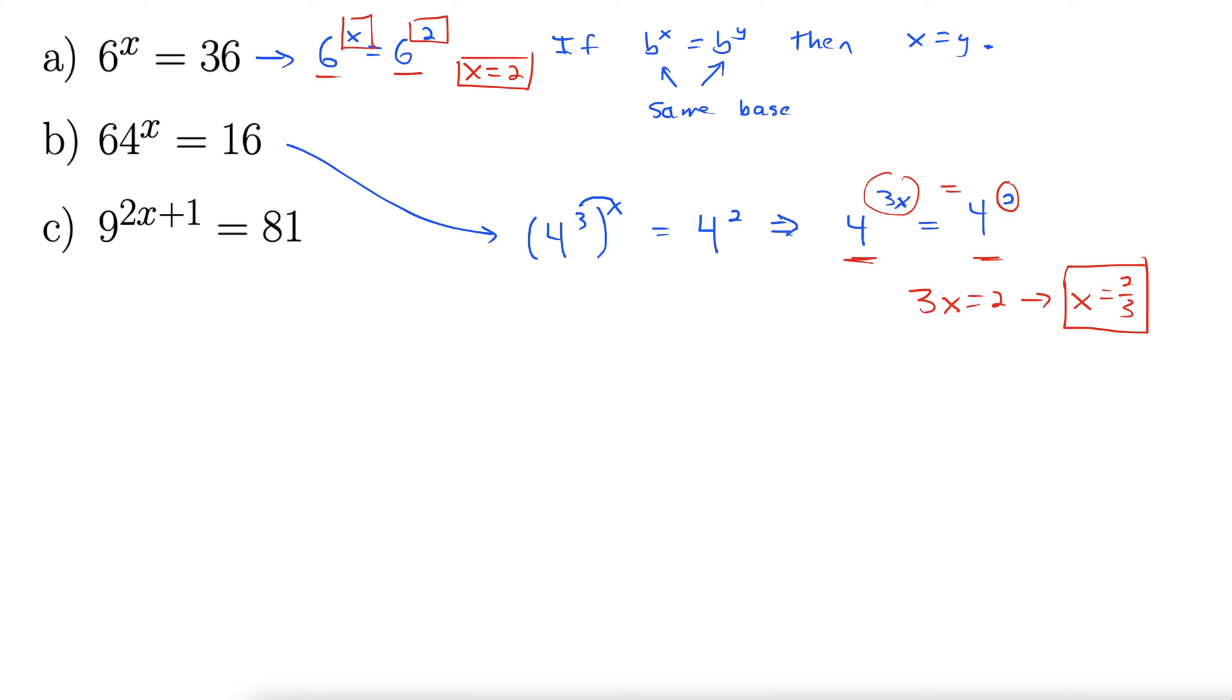So this one's not so bad. Alright, so I'm going to leave the left-hand side alone. 9 to the 2x plus 1. On the right-hand side, write 81 as 9 squared. There we have it. The same bases.